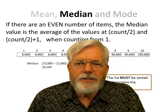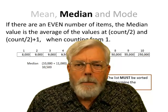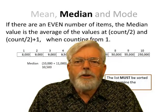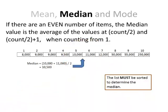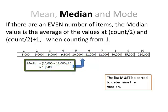Working with a list that has an even number is a little more complicated to determine the median value, because there isn't anything exactly in the center. I have to take the two different values — one on each side — and come up with the average, and that becomes the median. If I have 10 data items and the 5th is 10,000 and the 6th is 11,000, I take 10,000 plus 11,000, which is 21,000, divided by 2. So the median is 10,500.